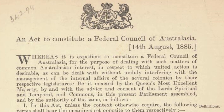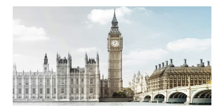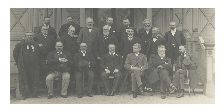Section 17 of this British Act states: 'Every bill passed by the council shall be presented for Her Majesty's assent to the governor of the colony in which the council shall be sitting, according to his discretion, but subject to the provisions in this act, and to Her Majesty's instructions, either that he assents thereto in Her Majesty's name, or that he withholds such assent, or that he reserves the bill for the signification of Her Majesty's pleasure, or that he will be prepared to assent thereto, subject to certain amendments to be specified by him.' Most sections of this act utilize similar language that secures convoluted ties with British Parliament and the Imperial Crown. The Federal Council may have allowed colonies to communicate and cooperate more effectively, but ultimately there was no change in sovereignty, and the Federal Council resembled nothing like the Federation of the United States or the later Australian Commonwealth.